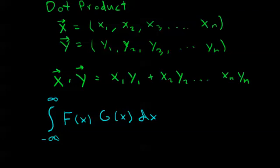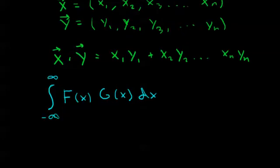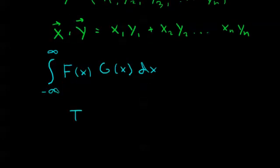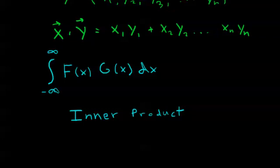We see that this is the same process but applied to a continuous system where we're taking the product of corresponding terms. At each value of x, we multiply these functions together and add up that result over all values of x. This process is called the inner product. The inner product is a broader definition, and the dot product is one form of the inner product.